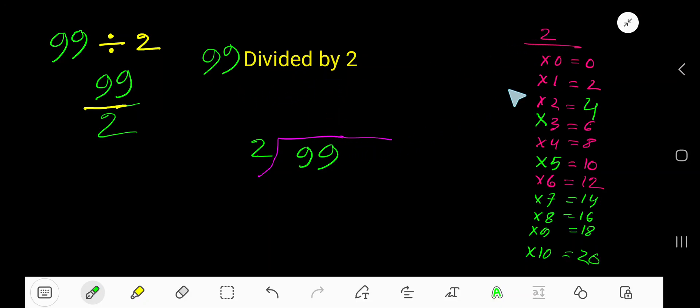99 divided by 2. 2 times 0 is 0, 2 times 1 is 2, 2 times 2 is 4, 2 times 3 is 6, 2 times 4 is 8, 2 times 5 is 10, 2 times 6 is 12 to find out the multiplication table of 2.